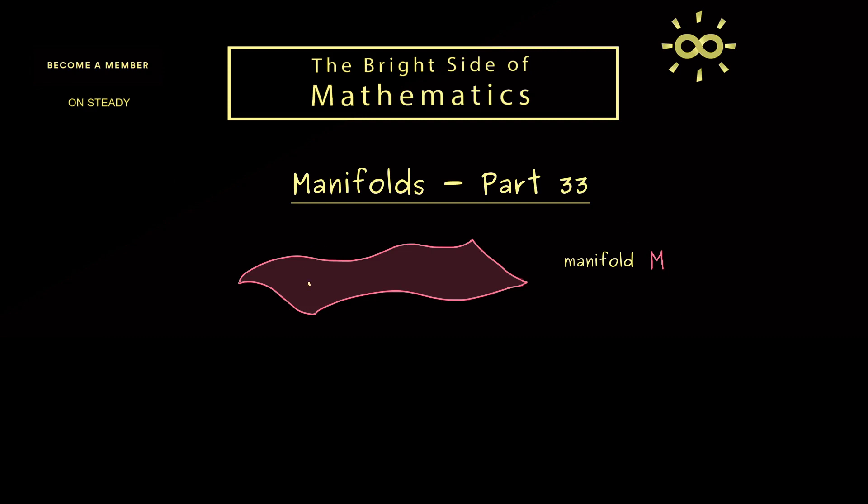For example, we could integrate along a curve on the manifold, and then as we know from complex analysis, this curve integral can have an orientation. This means that it matters if we integrate from p to q or from q to p.